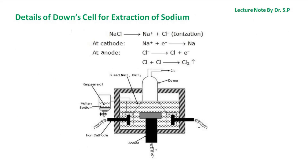Details of the Downs cell for extraction of sodium are shown in the figure. The Downs cell consists of a rectangular container of steel, and the inside of the tank is lined with fire bricks. The anode is a graphite rod which projects centrally up through the base of the cell. The cathode is a ring of iron which surrounds the anode. The anode and cathode are separated from each other by a cylindrical steel gauze diaphragm so that sodium and chlorine gas are kept apart.